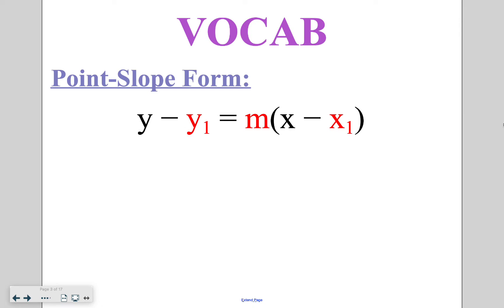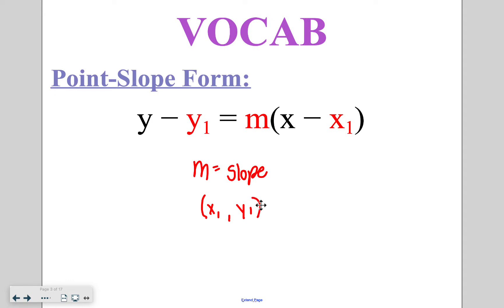We're first going to talk about point slope form which is y minus y1 equals m times x minus x1. Similar to slope intercept form, the m stands for our slope, and in point slope form instead of specifically using the y-intercept we can use any point on the line. The x1 and y1 stand for that point. The parts in red are replaced by numerical values, the parts in black stay in the equation, and those negative signs can turn to positive if it is minusing a negative.